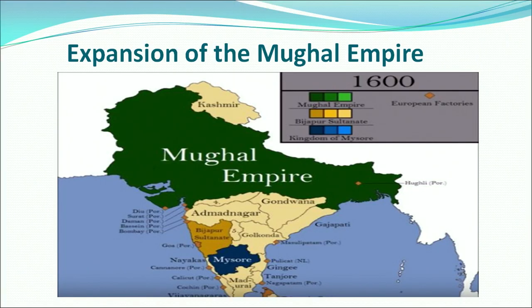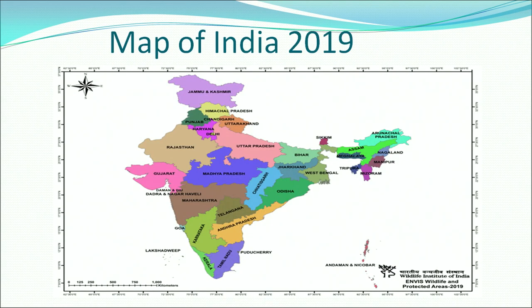We can look at the expansion of the Mughal Empire on the map, and in the southern part of the map of India, the regional states that existed during this period are visible. We focused on a few of the regional states, but many more existed during 12th to 18th century India. Regional states existed even before the 12th century and they exist even today.